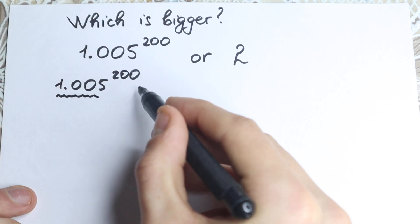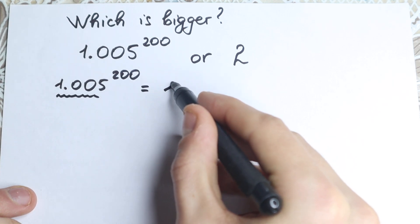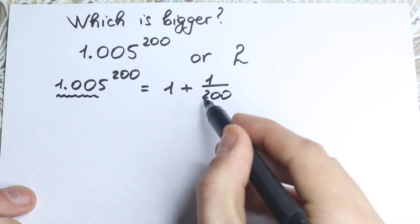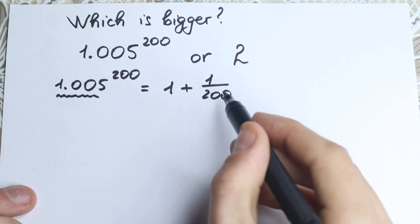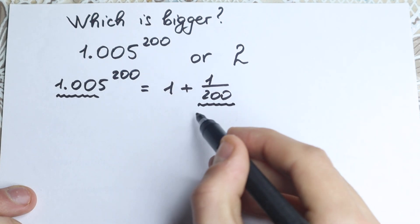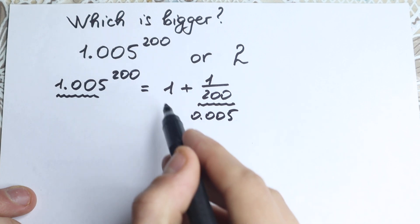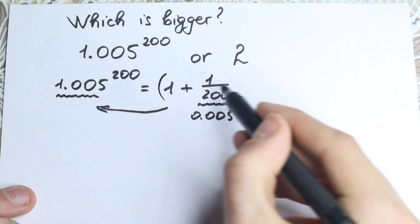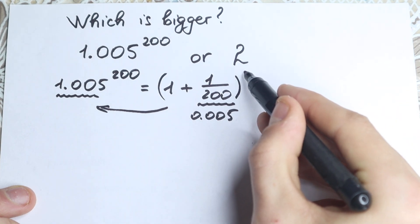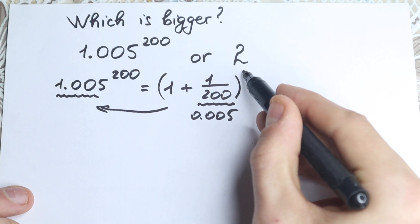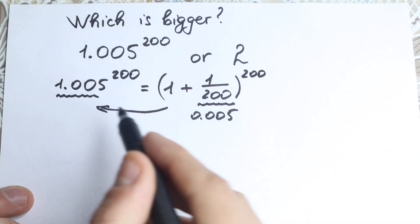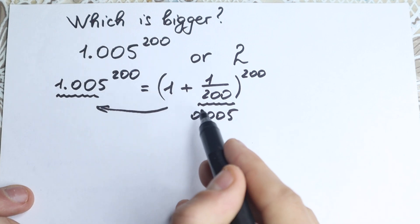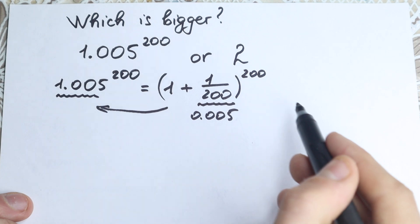This 1.005 can be written as 1 plus 1 over 200. So this 1 over 200 is equal to 0.005, and 1 plus 0.005 gives the same number. So we have 1 plus 1 over 200, all to the power 200. Instead of the decimal expression, we now have the fraction form: (1 + 1/200)^200.